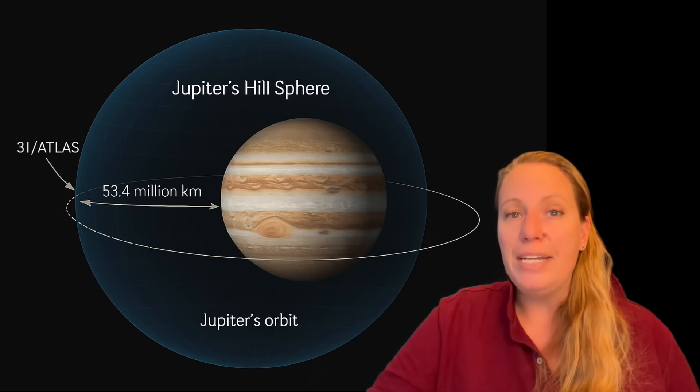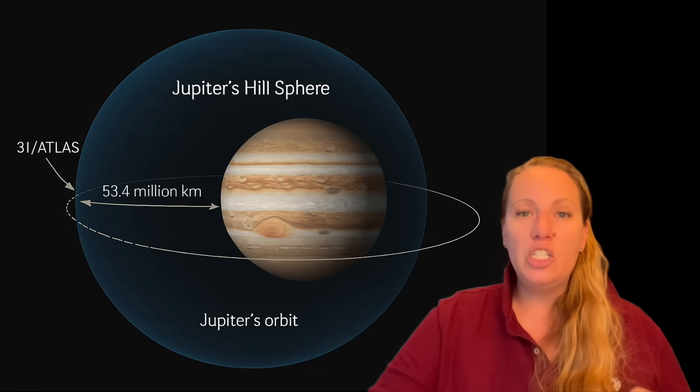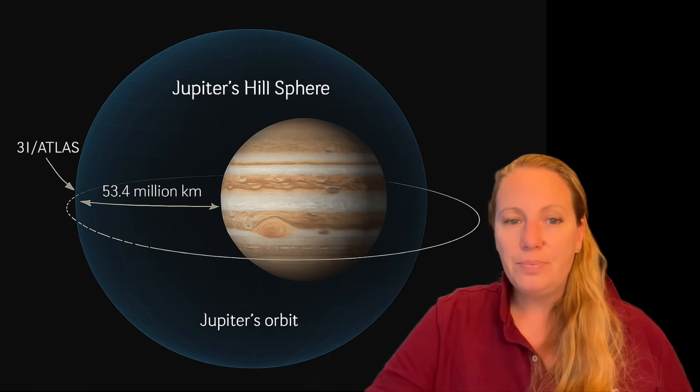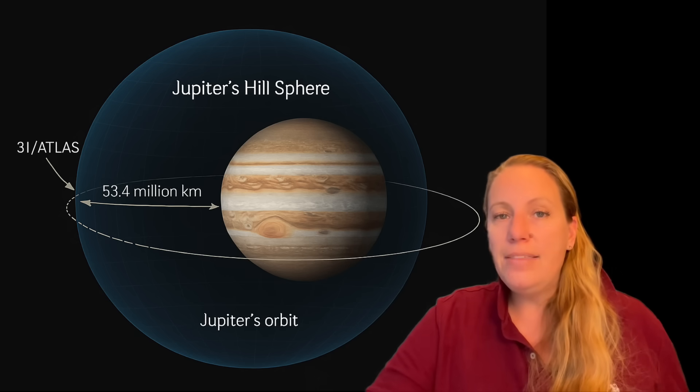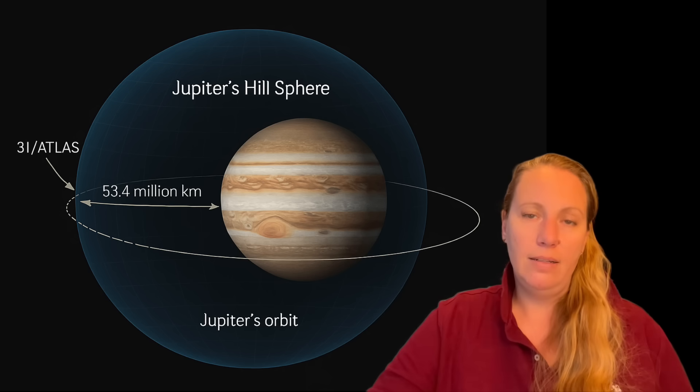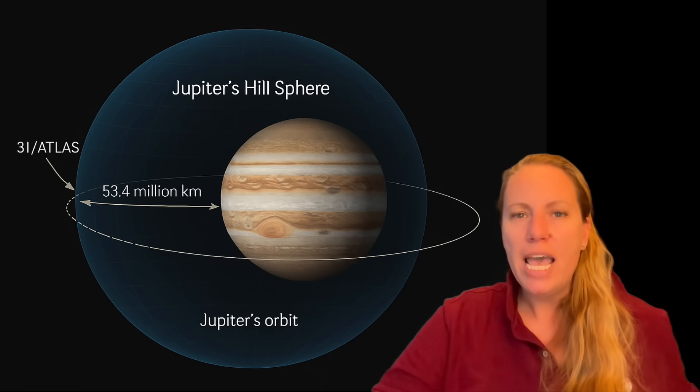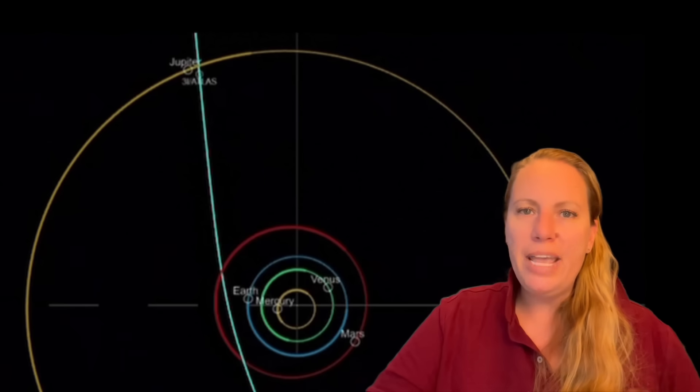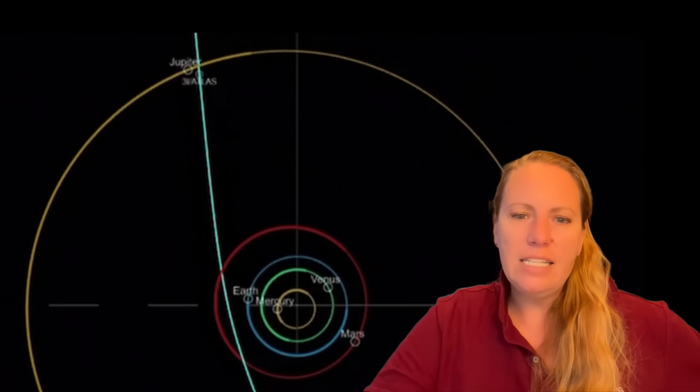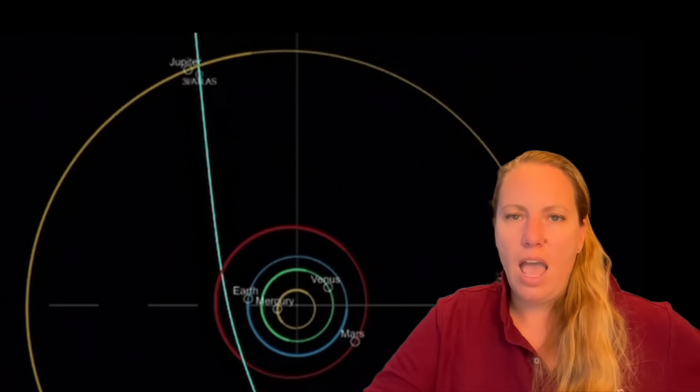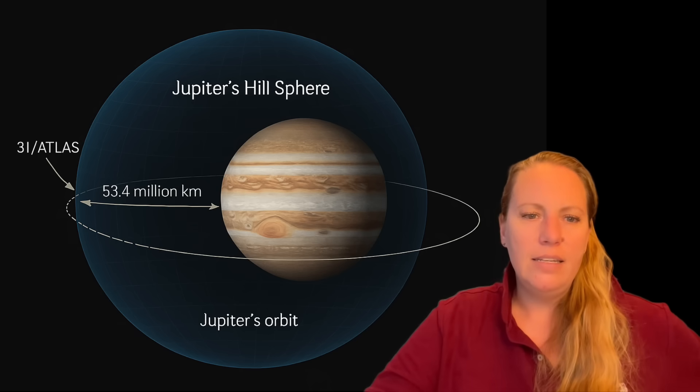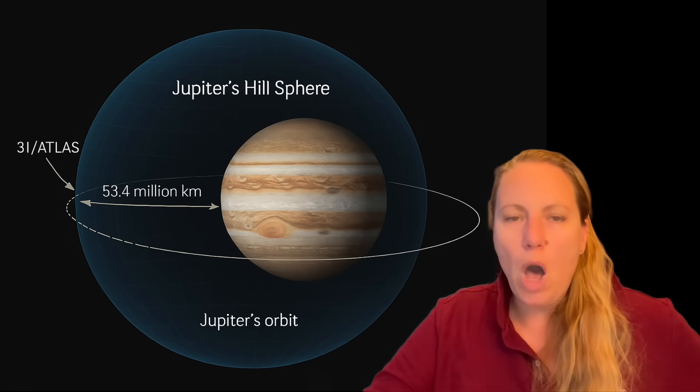Because inside that Hill radius, Jupiter's gravity dominates. So anything outside that radius gets stripped away by the sun. And 3i Atlas exactly meets that radius, changed direction in perihelion to get to Jupiter. That is such an unlikely possibility.